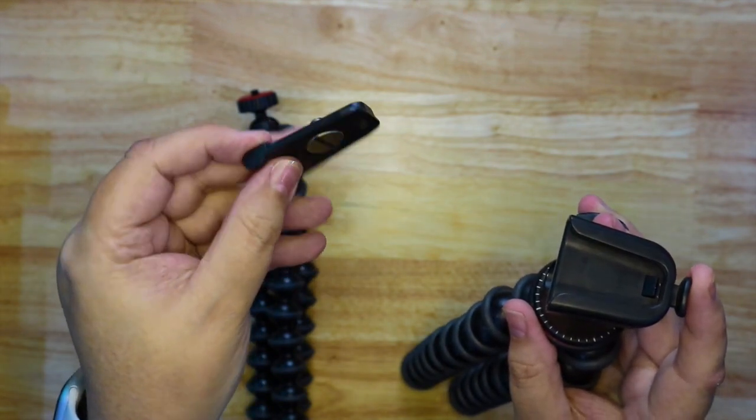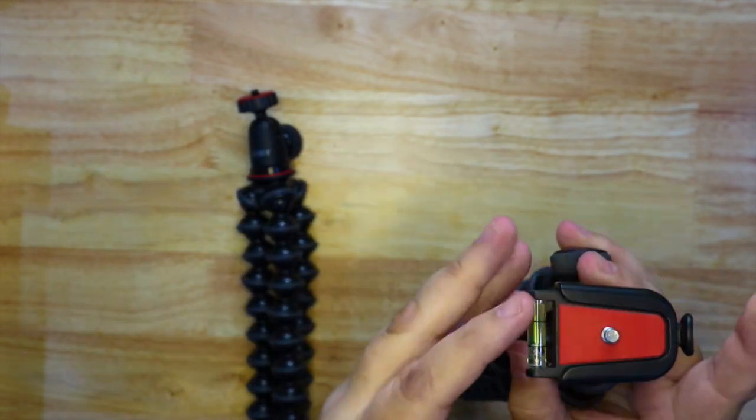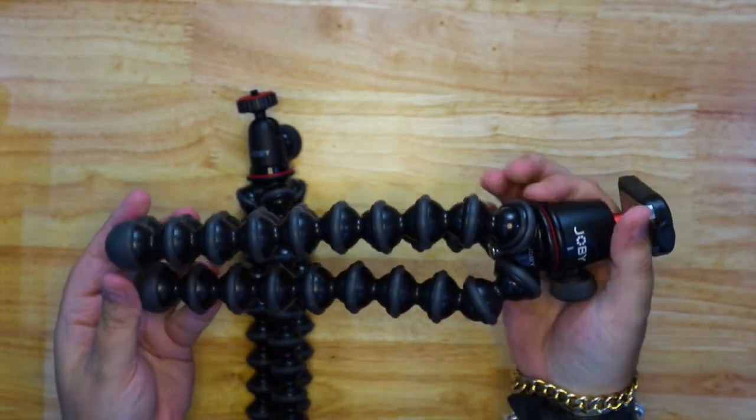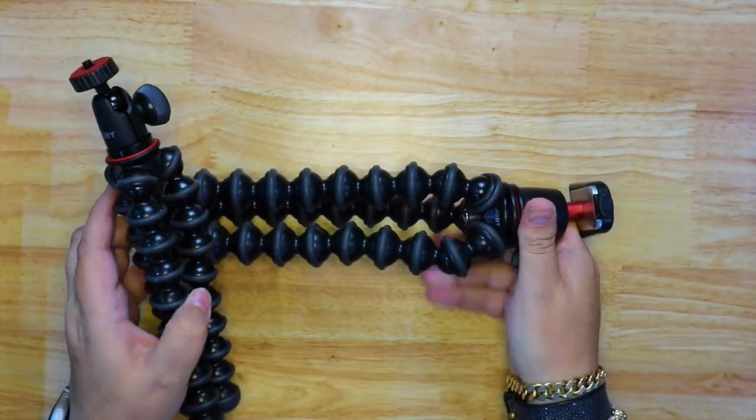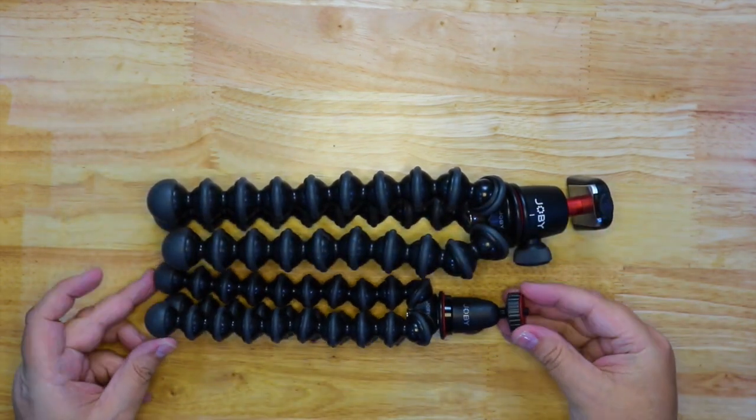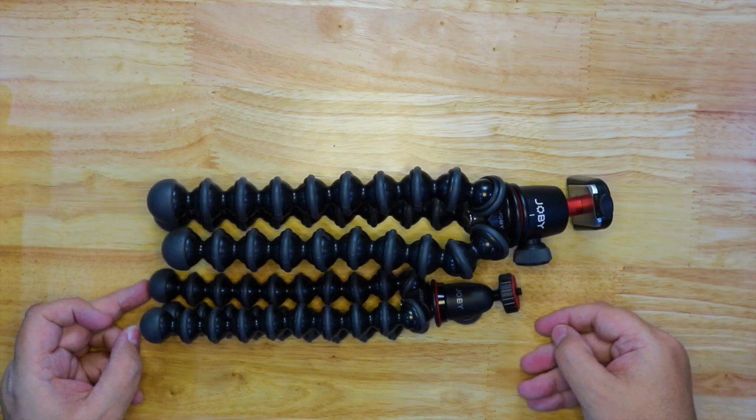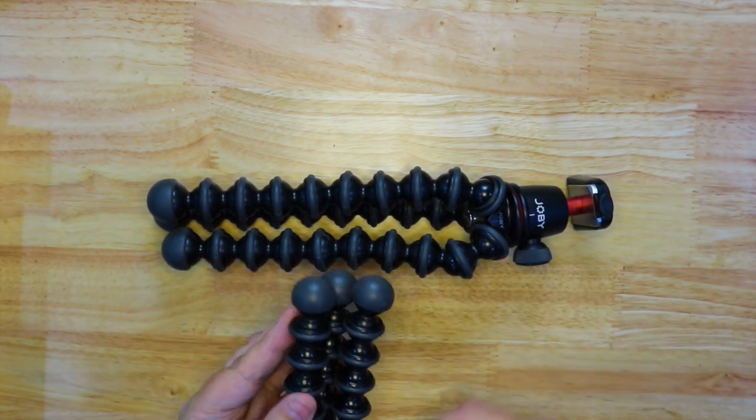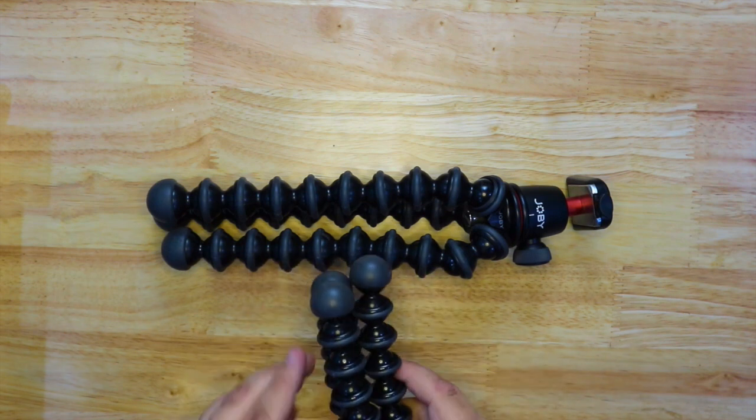This one has a removable head and a coin slot so you can tighten it onto the camera. And it has a level as well. This is probably the better one that they do. It's very nice, very reliable. But the smaller ones, it's smaller and you can chuck it in your bag easier. And if you have a smaller camera like the M50, it's perfect.